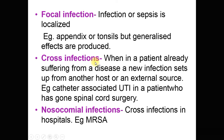Cross infections are those where the patient is already suffering from a disease — not a microbial disease but some other problem — and an infection sets up from another host, an external source, or the environment. For example, a patient who has undergone spinal cord surgery and is given a catheter to pass urine may get a UTI — this is called catheter-associated UTI, which is an example of cross infection.